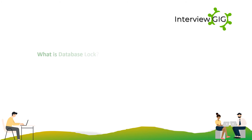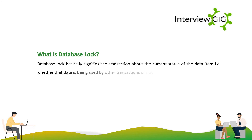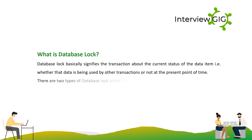A database lock basically signifies the transaction about the current status of the data item — that is, whether that data is being used by other transactions or not at the present point of time. There are two types of database lock: shared lock and exclusive lock.